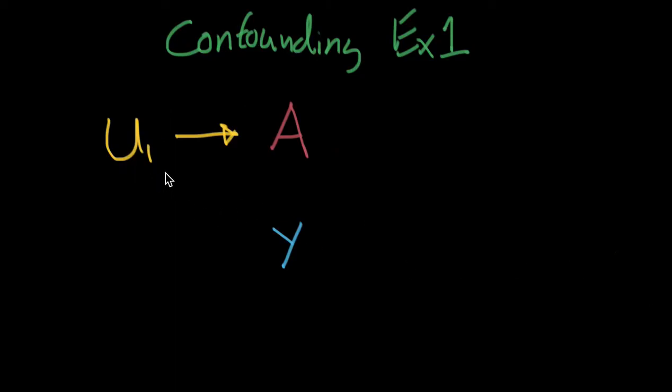Let's say that this unmeasured confounder is also likely to influence some measured variable here. And this measured variable might be a patient survey in the beginning. Let's say we have one more unmeasured confounder. And this is going to be whether they have an infection or something like this.